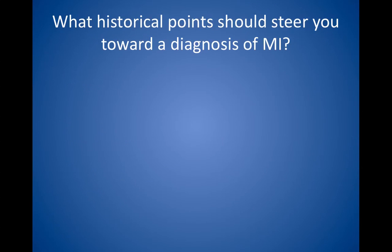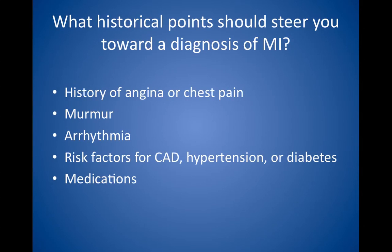What historical points should steer you toward a diagnosis of myocardial infarction? Patients often have a history of angina or previous chest pain, murmurs, arrhythmias, risk factors for coronary artery disease, hypertension, or diabetes. They may also be taking medications such as digoxin, furosemide, cholesterol medications, antihypertensives, or other cardiac medications.